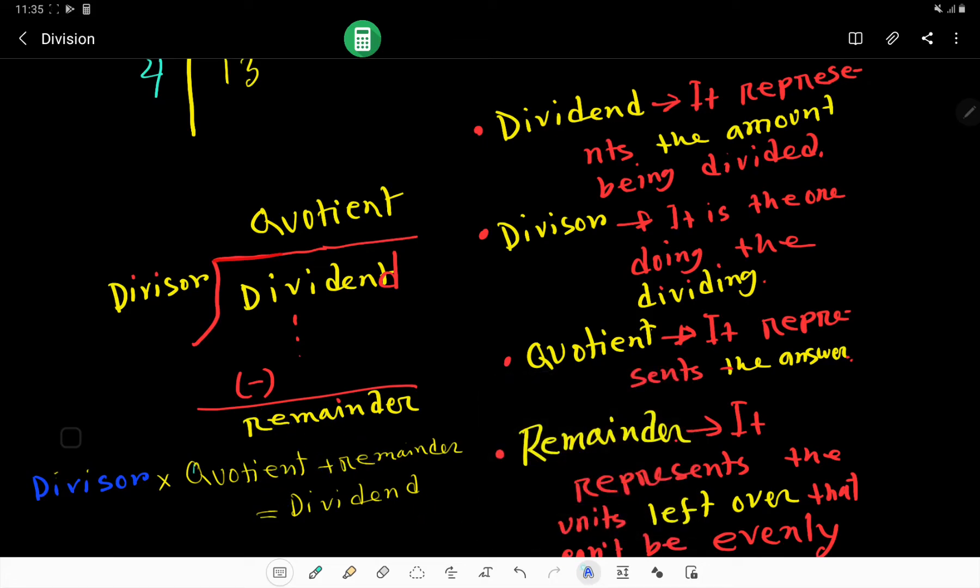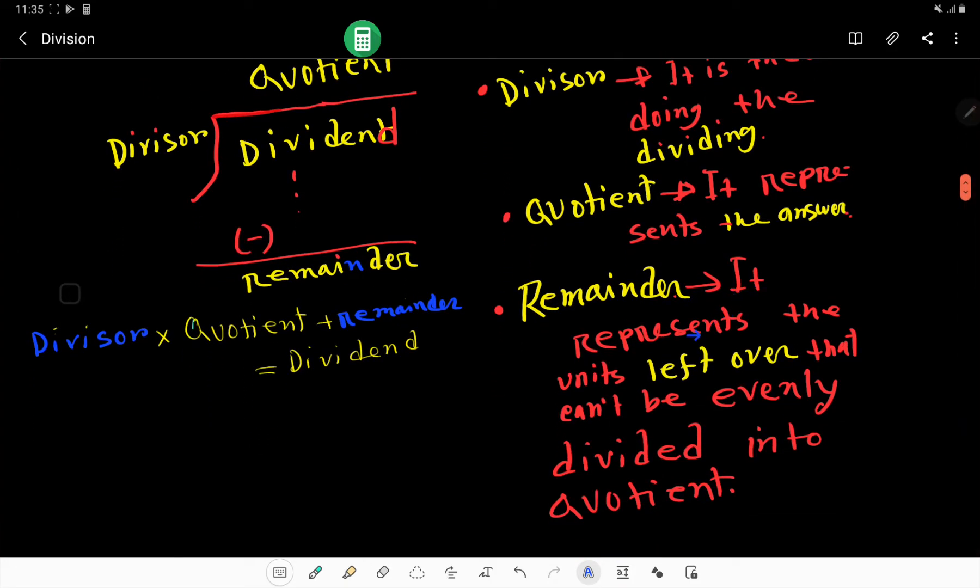Dividend represents the amount being divided. Divisor is the one doing the dividing. Quotient represents the answer. Remainder represents the units left over that cannot be evenly divided into the quotient.